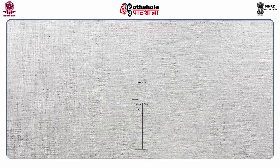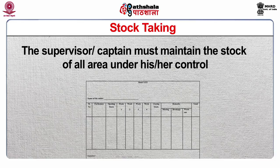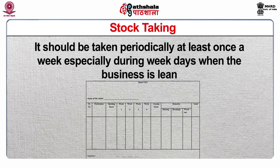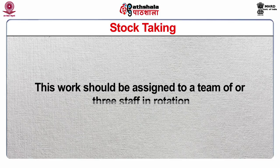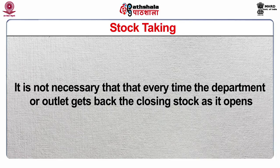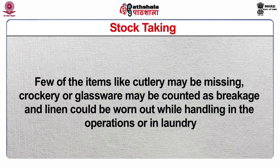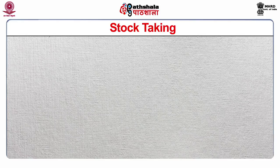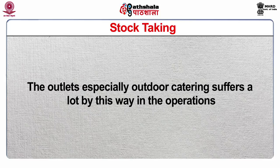Stock Taking: The supervisor must maintain the stock of all areas under his or her control. Stock taking should be done periodically, at least once a week, especially during weekdays when business is lean. This work should be assigned to a team of two or three staff in rotation. It is also known as physical inventory and is entered in the prescribed format of the organization. It is not necessary that every time the department or outlet gets back the same closing stock as it opens — few items like cutlery may be missing, crockery or glassware may be counted as breakage, and linen could be worn out while handling in operations or in laundry. Outlets, especially outdoor catering, suffer a lot in this way during operations.